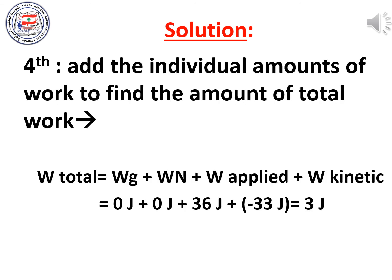In the final step, add the individual amounts of work to find the total work. W total = Wg + Wn + W_applied + W_friction = 0 joules + 0 joules + 36 joules + (−33 joules) = 3 joules. The total work done on the drums is equal to 3 joules.